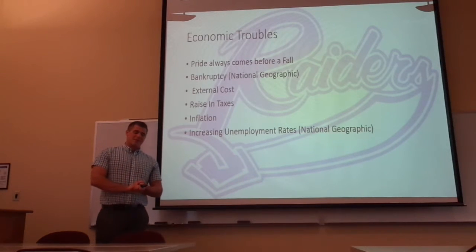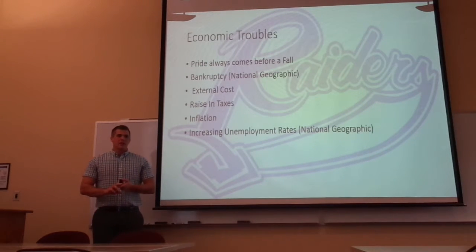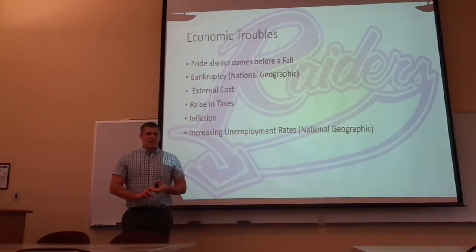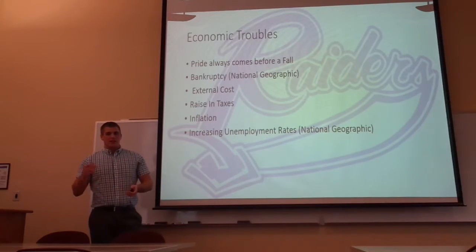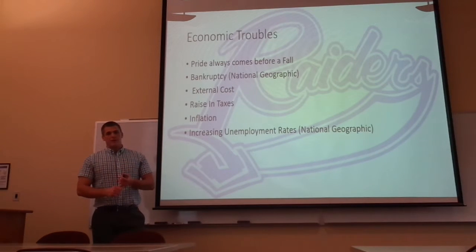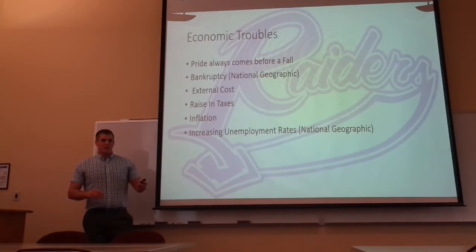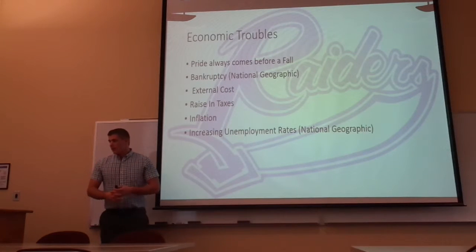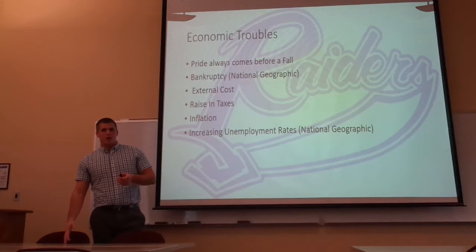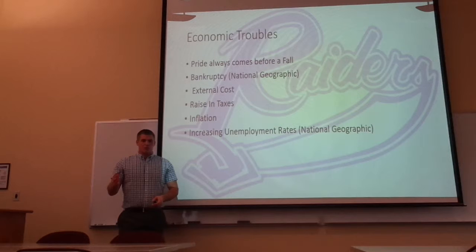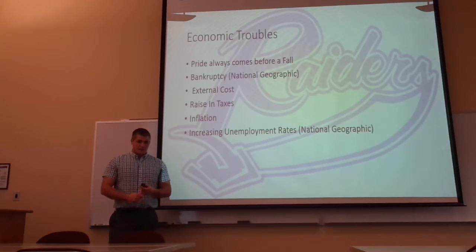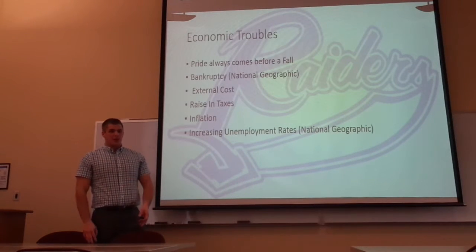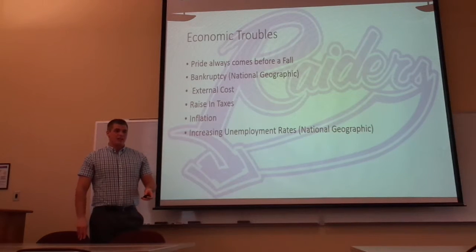Next, I want to go over the economic troubles that happened in the Roman Empire. First, pride always comes before a fall. As mentioned with the decline in morals, the emperors became very prideful and began spending all the gold they earned on themselves rather than on infrastructure, sociological reforms, or political affairs. The Roman Empire then went into bankruptcy because they were spending money on goods for personal gain. External costs also went to the military to defend the vast borders, which led to a rise in taxes, causing inflation and increasing unemployment rates. The inflation in Rome was so bad that people began burning their own money because it was more worth the heat than buying food.